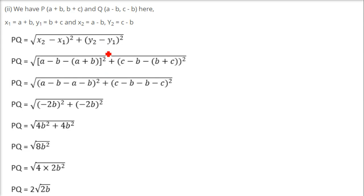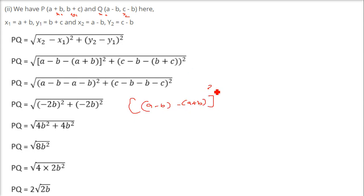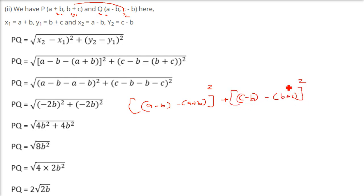Let us take the next one. This is x1, y1, x2, y2. So x2 minus x1 is (a minus b) minus (a plus b), plus y2 minus y1, so (c minus b) minus (b plus c) whole square, all under root.